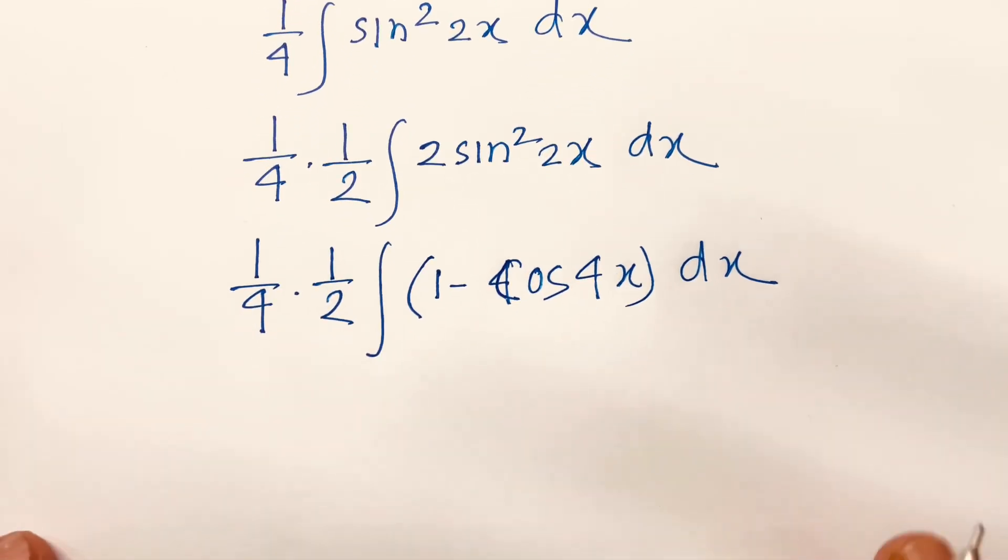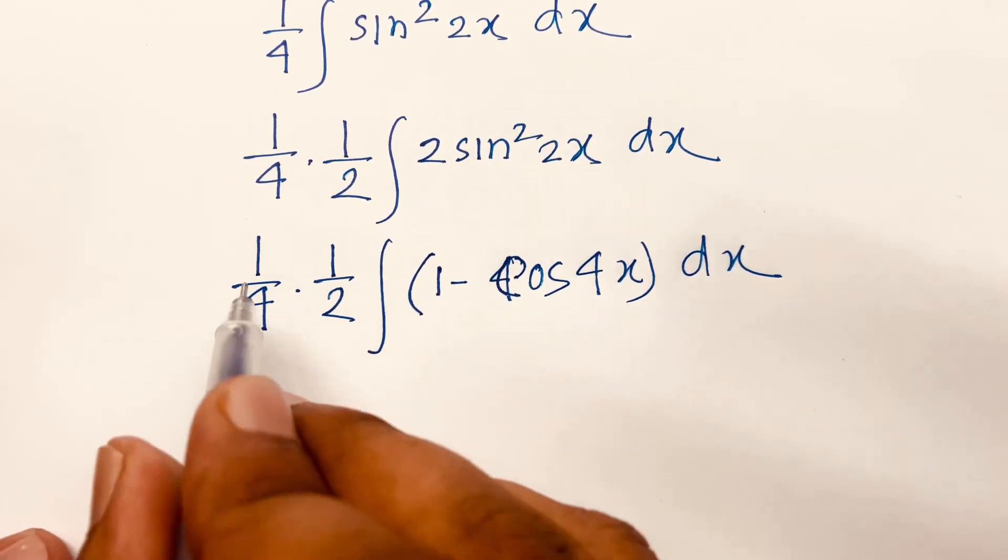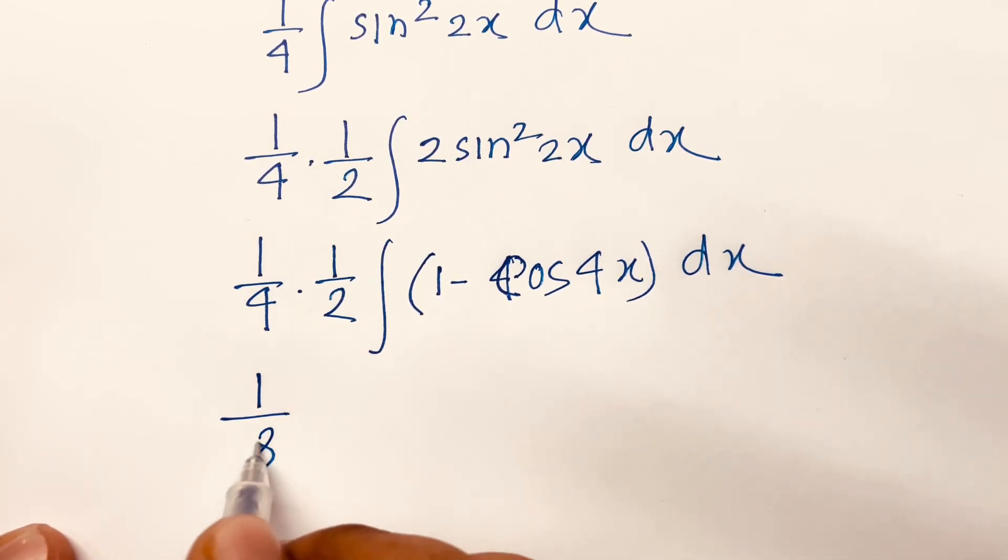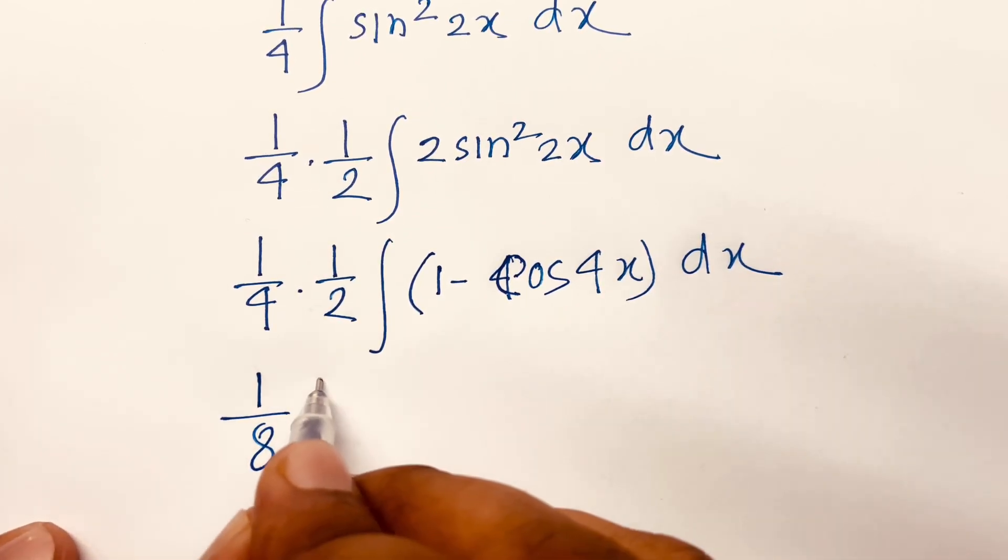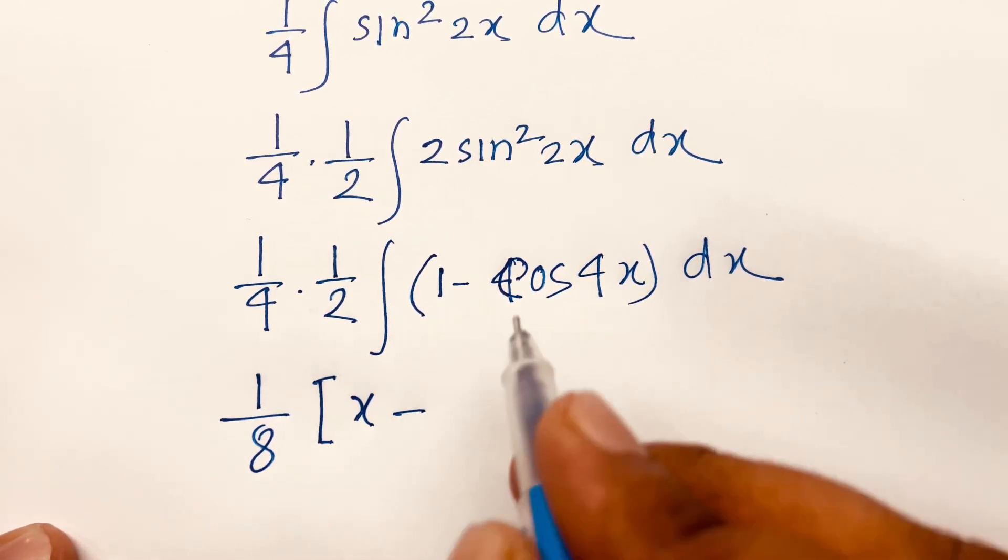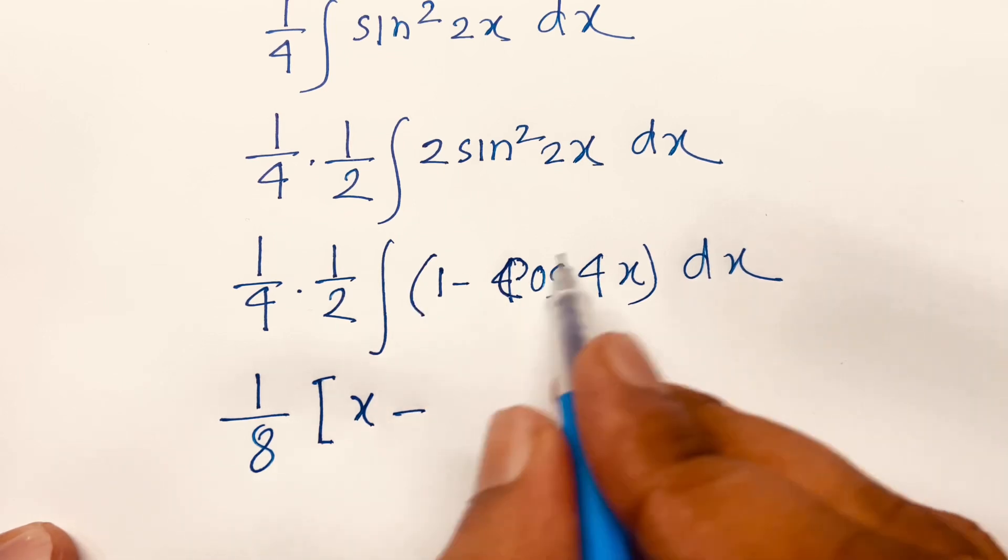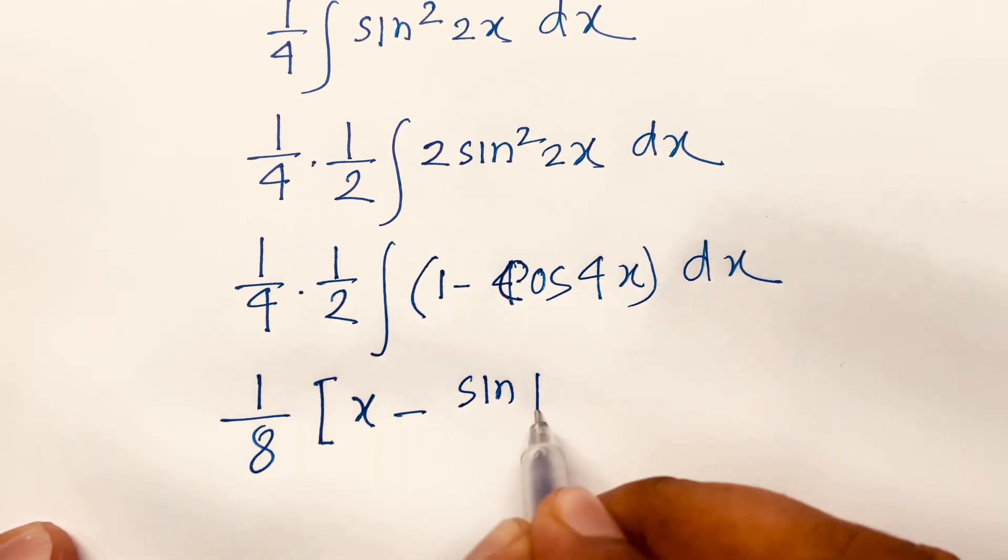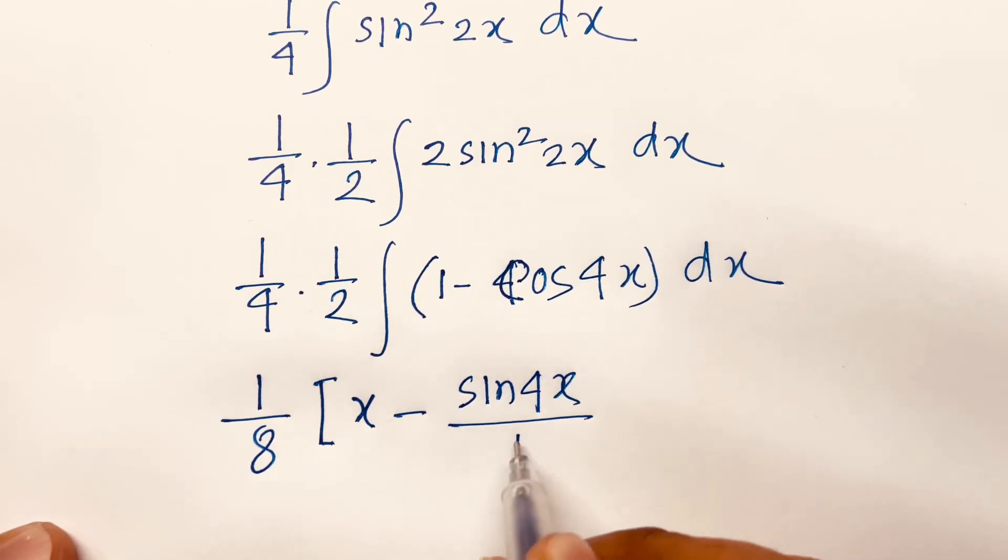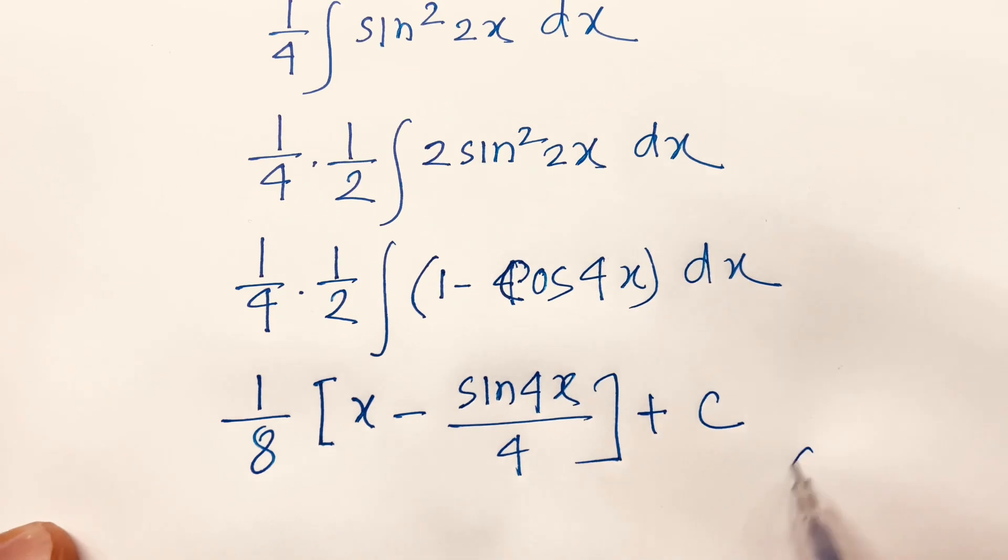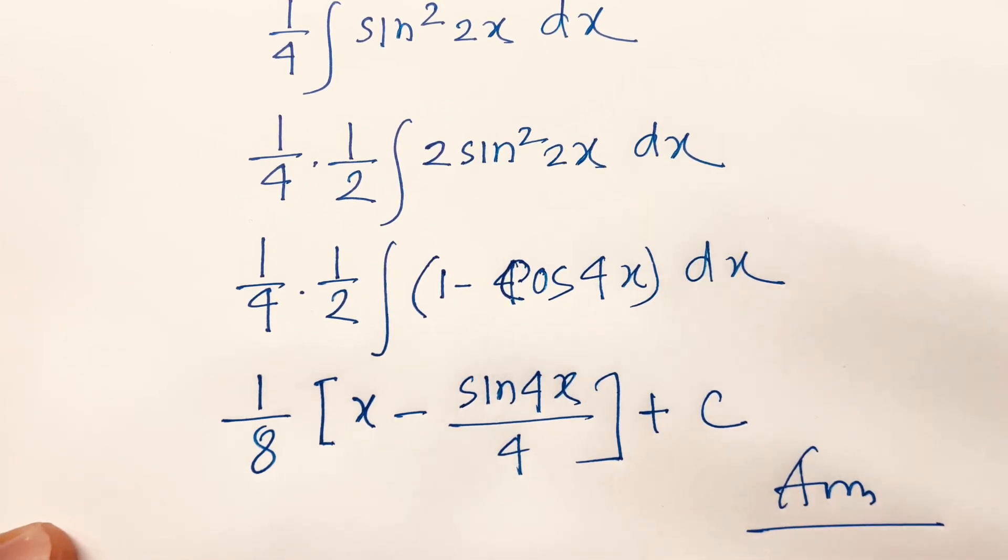Then, I can say 1 over 4 times 2 is equal to 8 and integral of 1 dx is x minus integral of cos 4x is sine 4x over 4 plus c. This is our final answer.